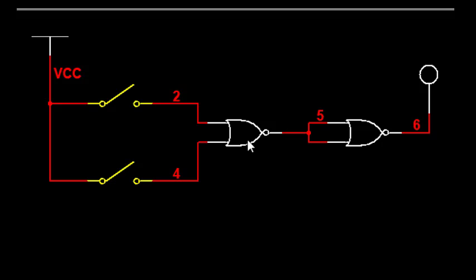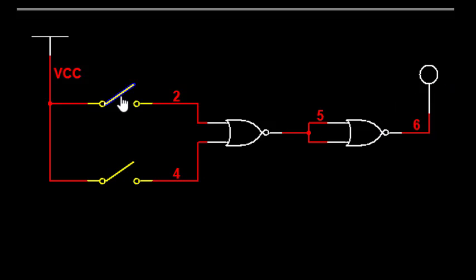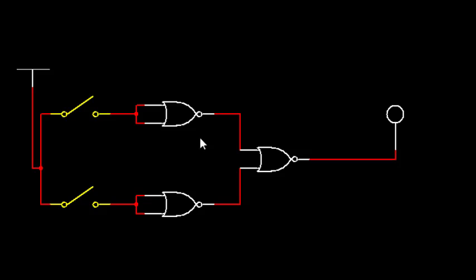Now NOR as OR: we have two NOR gates. Inputs 0 0 gives output 0; 0 1 gives output 1; 1 0 gives output 1; and 1 1 gives output 1. These two NOR gates together are working as an OR gate.